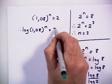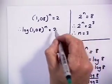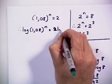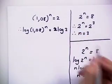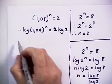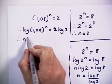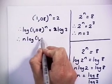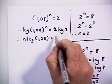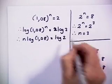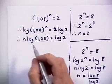Log of 2, yes, log on both sides. Now we can apply the log law. We can take n to the front of the log, which would be n log 1.08 equals to log 2. Remember we're looking for n.